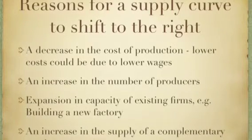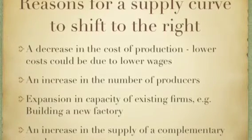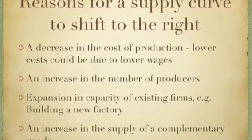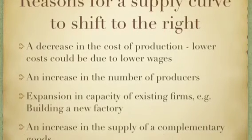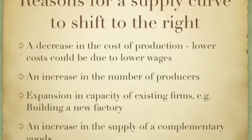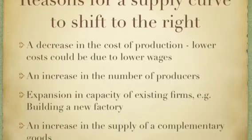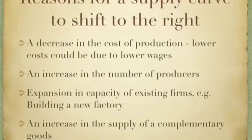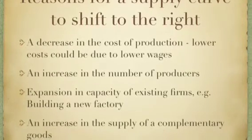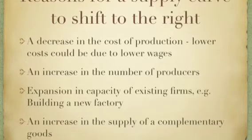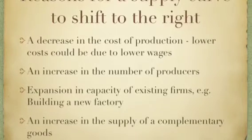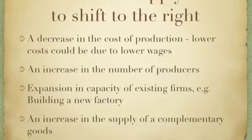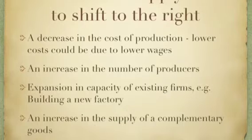Thirdly, an increase in the supply curve to the right can ultimately be caused by an expansion in capacity of existing firms. An example of this would be building a new factory. If there are more factories therefore the firm or business can create more because there are more factories producing the good.